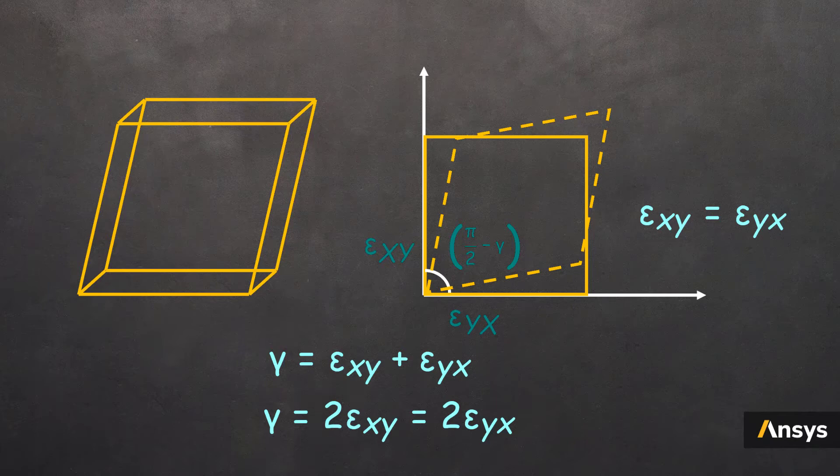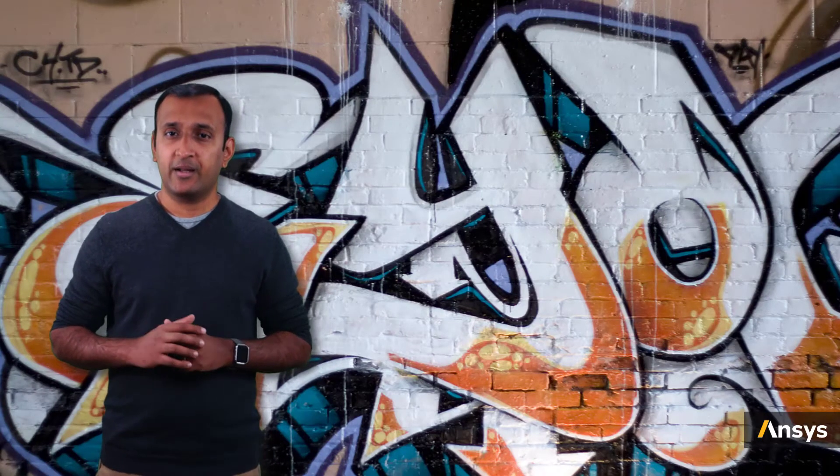For this reason, in the strain vector, we tend to include this factor of 2 before the shear strains. So when someone reports to you the shear strain, do verify with them whether what they are referring to is the engineering or the true shear strains.